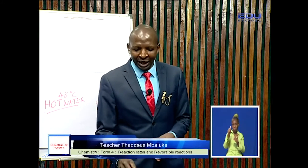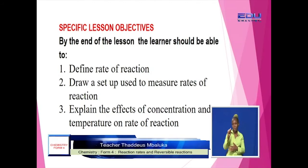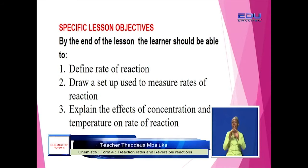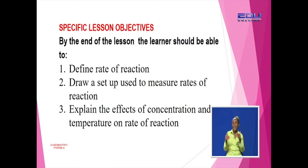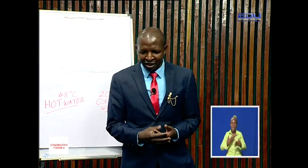We'll start by looking at the lesson objectives. By the end of the lesson, the learner should be able to define the rate of reaction, draw a setup that is used to measure the rate of reaction, and explain the effects of concentration and temperature on the rate of reaction. Now let's start by looking at what is the rate of reaction.